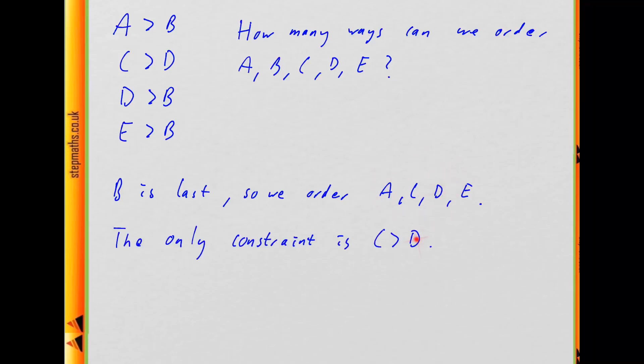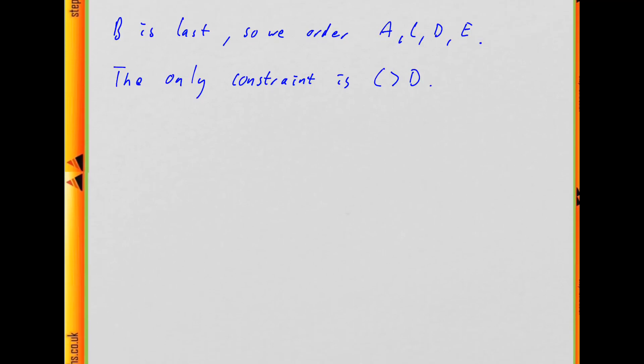So we're going to order these four things, but we need to have C greater than D. So I think the way to think now is, suppose this wasn't a constraint, what would the number of orders be then? It would be four factorial, because there's four things, and we're imagining we don't care about the exact order. We'll just look at the number of ways we can order them. So there's four factorial orders of four things, and now we try and apply this constraint.